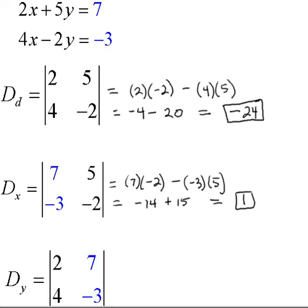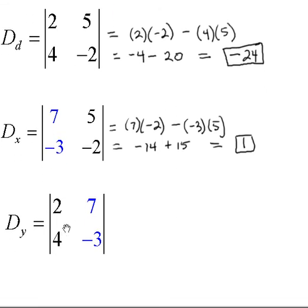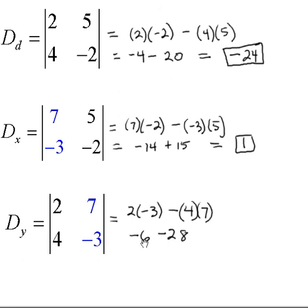For the numerator of y, we replace the y coefficients — 5 and negative 2 — with the constants 7 and negative 3. Let's calculate that determinant: multiply the diagonal going down, 2 times negative 3. Subtract the product of the diagonal going up, 4 times 7. That gives us negative 6 minus 28, which equals negative 34.